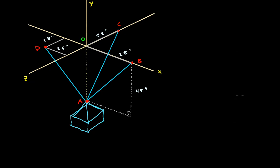So this is the setup here. There's a crate being hung at point A down here. Point A is on the negative y-axis and the attachment points are at point B, C, and D which are all in the XZ plane. You can kind of think of the XZ plane as the ceiling and the crate is hanging below that ceiling a distance of 45 inches. We're also given that the crate weighs a thousand pounds and the question is asking us to find the amount of tension in each of the three cables AB, AC, and AD.